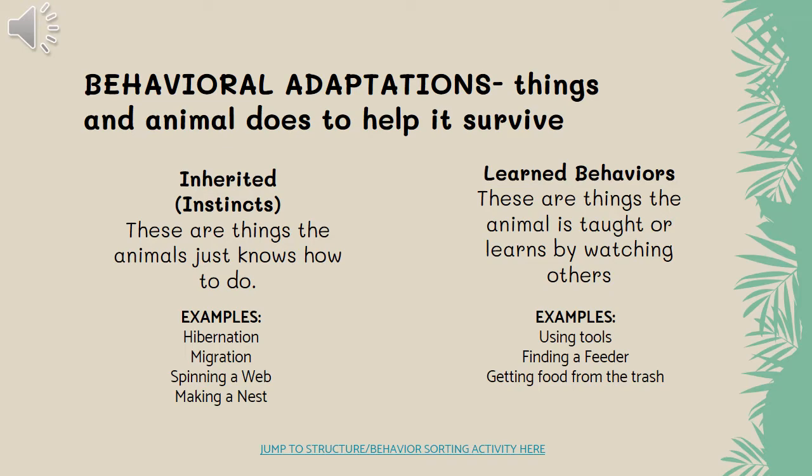We also have learned behaviors — things that an animal could be taught, either by people or their parents, or something they learn by watching other animals. Good examples would be finding and using a feeder in a forest, a bear that learns to gather food from the trash, or using tools. There are a lot of animals able to use tools — otters use shells, monkeys use sticks. But if we're talking about a behavioral adaptation, it's something that the animal has to be doing.